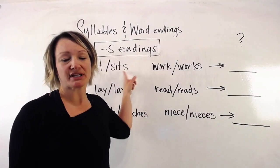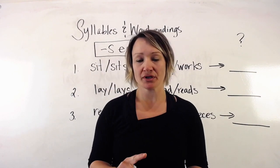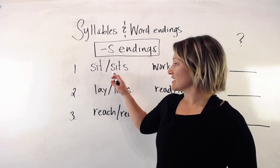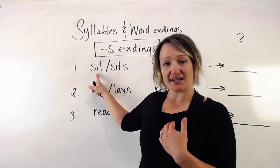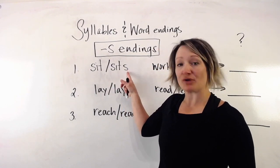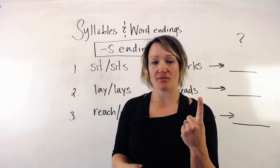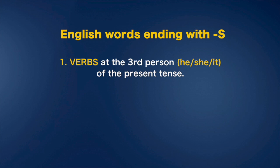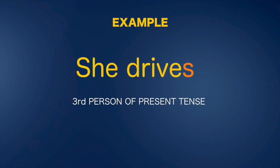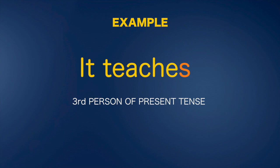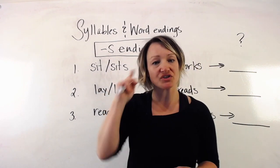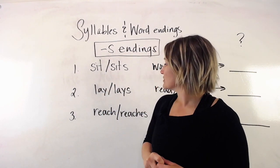Remember, when we add 's' to the end of a word, we can do that in three situations. In this case, this is a verb — 'I sit,' 'she sits' — so this is the third person present tense of the verb 'sit.' Number one is verb: the third person in the present tense, we put an 's.' For example: the dog walks, she drives, it teaches. So 'sit' and 'sits.'